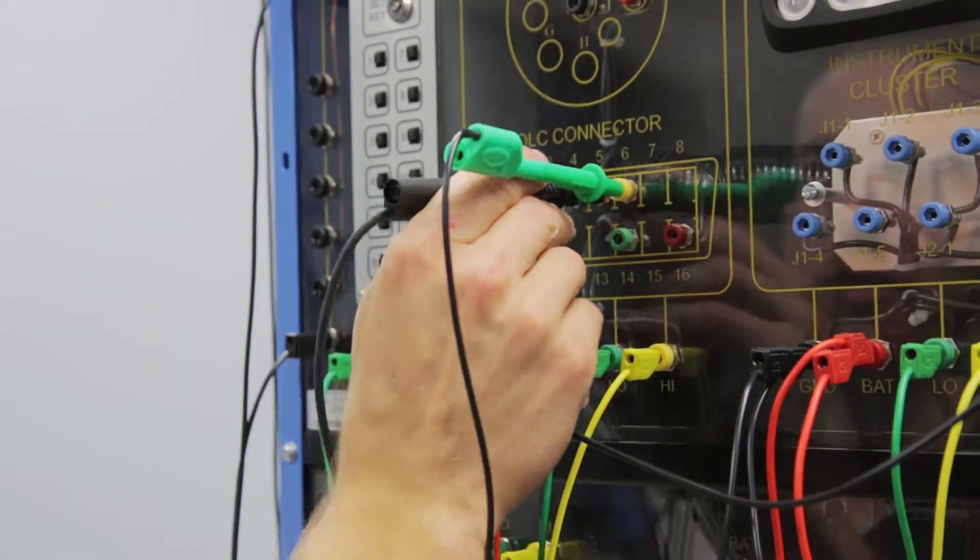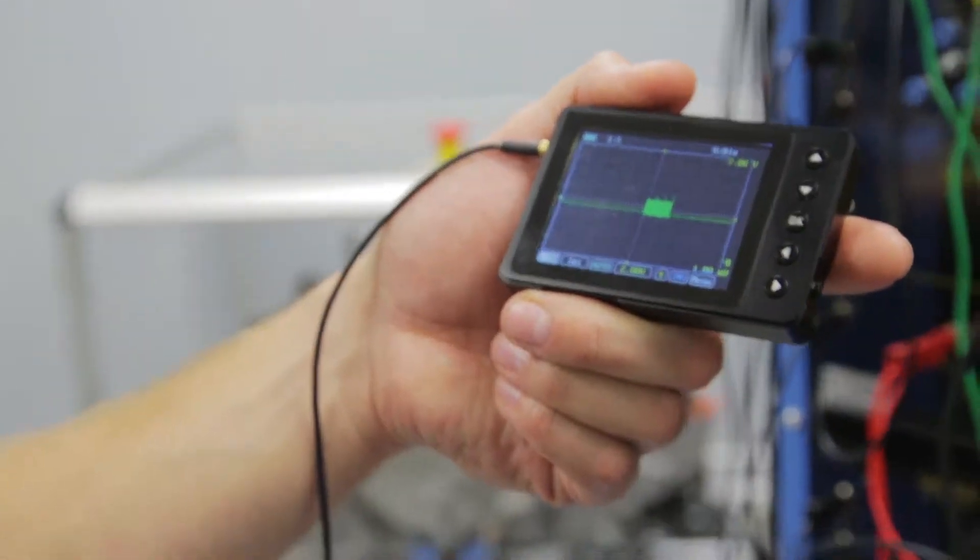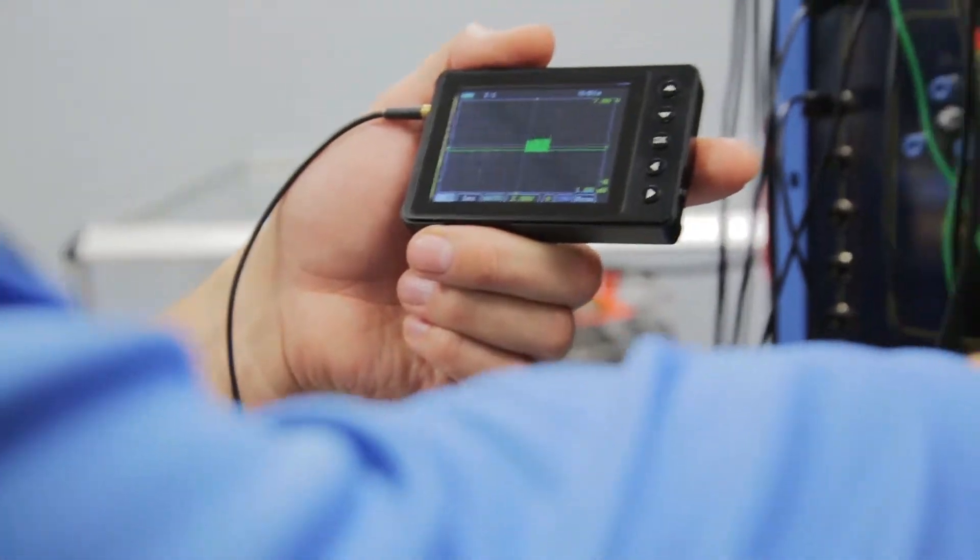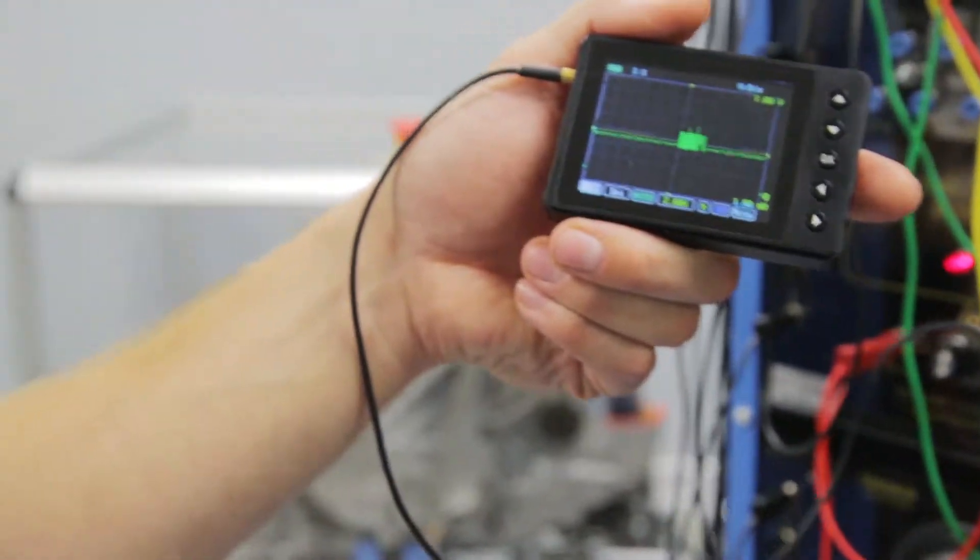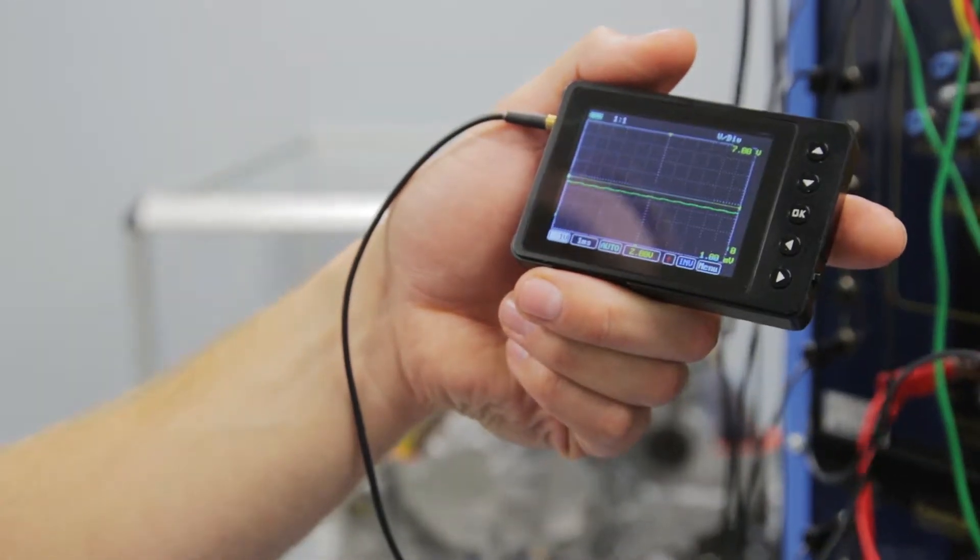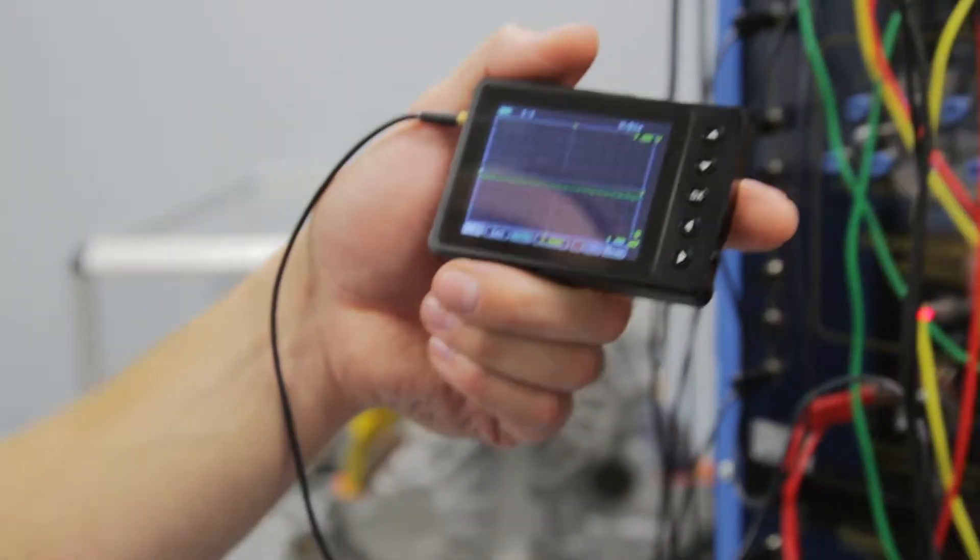I always plug into CAN high and go into a ground and I'm doing that here. We can change the time base and the voltage scale but we're just trying to get an image and we can do that both on the Deutsch connector or the OBD2 connector. If we turn off the wake-up and we just wait till the system shuts down, those two modules went to sleep.